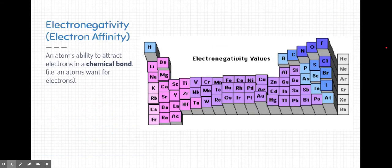The last trend we're going to learn about is electronegativity, and some people call it electron affinity because it's an atom's ability to attract or be attracted to electrons in a chemical bond. We're going to talk a lot about chemical bonds later and how elements bond to one another, and electronegativity is a big aspect of that.